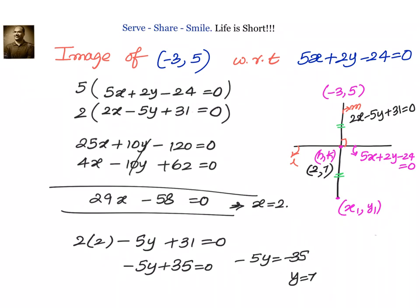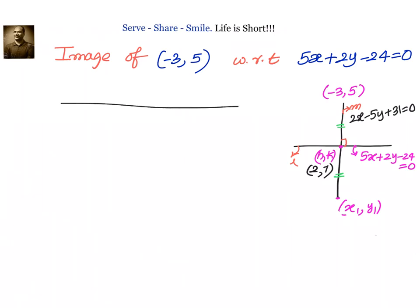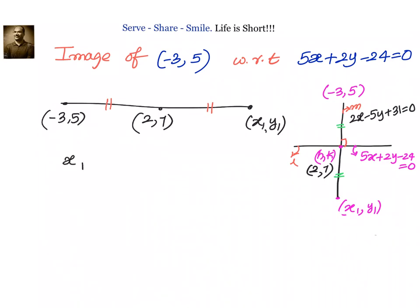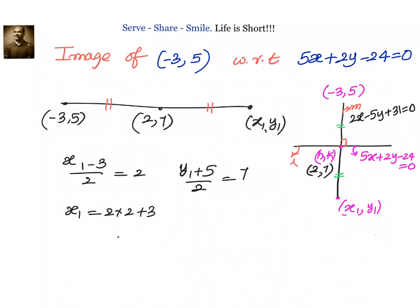We know (2, 7) is the midpoint of (-3, 5) and (x1, y1). Using the midpoint formula: (x1 - 3)/2 = 2 and (y1 + 5)/2 = 7. Solving: x1 = 2×2 + 3 = 7, and y1 = 2×7 - 5 = 14 - 5 = 9. So the coordinates of the image of point (-3, 5) with respect to the line 5x + 2y - 24 = 0 are (7, 9).